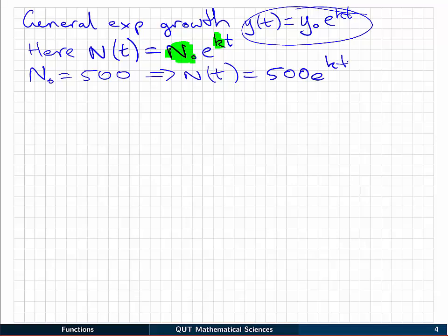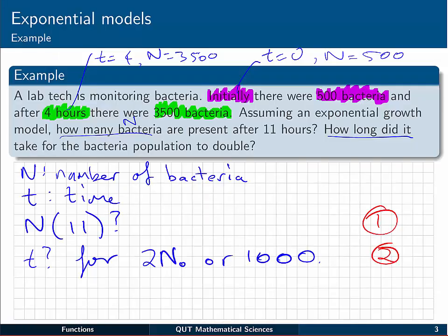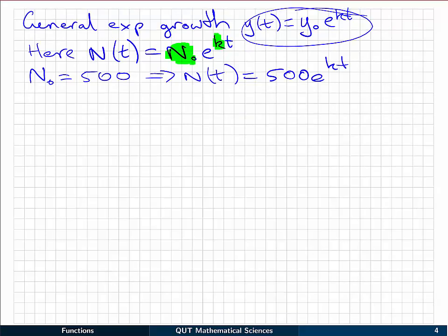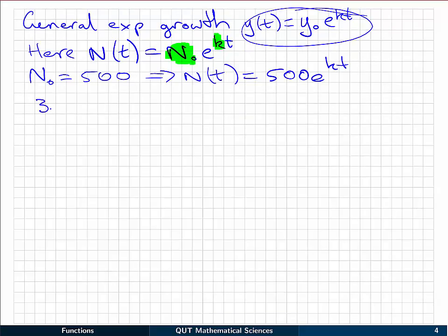And to complete the model, we just need to figure out what k is. To do that, we're going to use the other piece of information that we were told, at t equals 4, N is 3500. So we know that 3500, according to our model, would be N(4), and that must be equal to 500 multiplied by e to the k, which we don't know, multiplied by the time value of 4. And we just need to rearrange this and solve for the variable k.